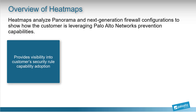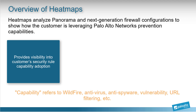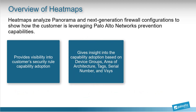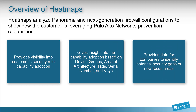Heatmaps are generated for us to learn the customer's security rule capability adoption. When we say capability, we are referring to WildFire, antivirus, antispyware, vulnerability and URL filtering, etc. Heatmaps give us insights into the capability adoption based on device group, area of architecture, tags, serial number, and vsys as well as other criteria.